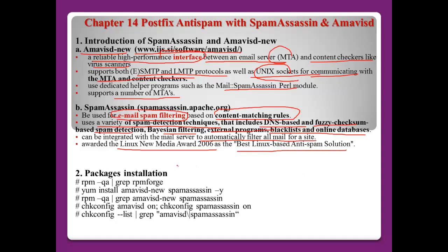For package installation, to install Amavis and SpamAssassin you need to first install RPM Forge, then install amavisd-new and spamassassin. After that, check the installation using those commands. To enable these services at each runlevel use: chkconfig amavisd on and chkconfig spamassassin on, then check those services.